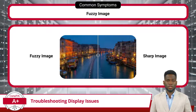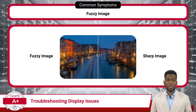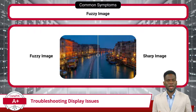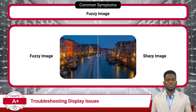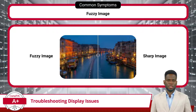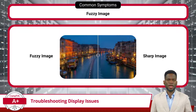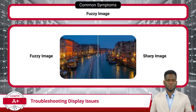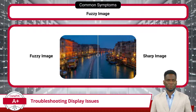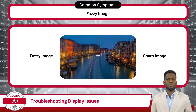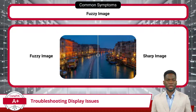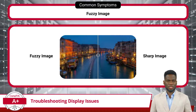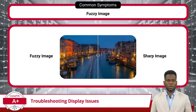The image a projector produces may also appear fuzzy at times — characterized by a blurry or less-than-sharp image. This can result from various factors, including an out-of-focus lens or improper resolution settings. Users should check the focus of the projector lens to ensure it is properly adjusted for sharpness. Additionally, verifying and adjusting the resolution settings on both the projector and the source device can help optimize image clarity.